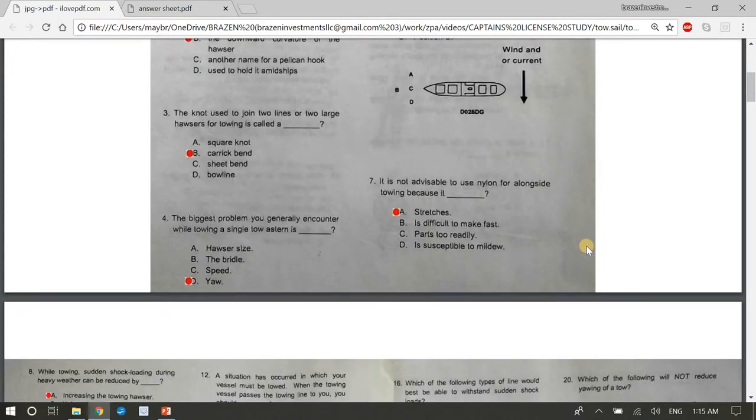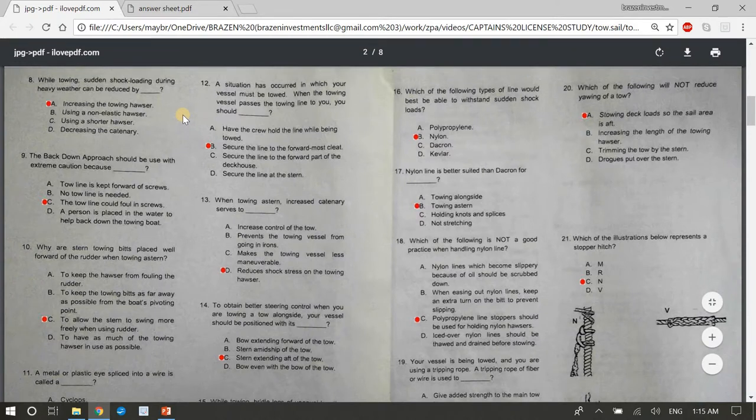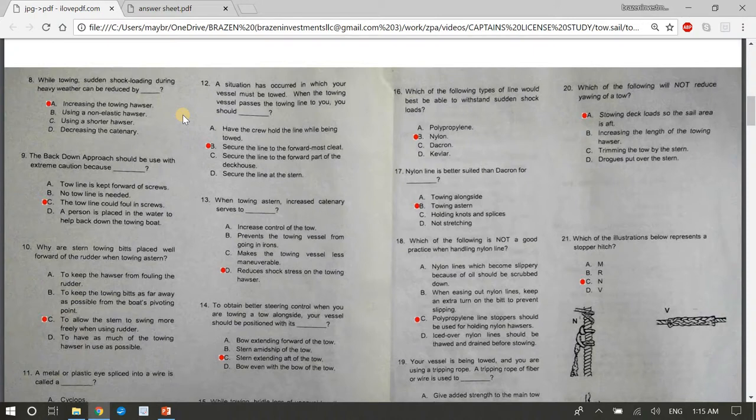Seven, it is not advisable to use nylon for alongside towing because it blank. The answer is A, stretches. Eight, while towing, sudden shock loading during heavy weather can be reduced by A, increasing the towing hauser. Nine, the back down approach should be used with extreme caution because C, the toe line could foul in the screws or propellers. Ten, why are astern towing bits placed well forward of the rudder when towing astern? The answer is C, to allow the stern to swing more freely when using the rudder.